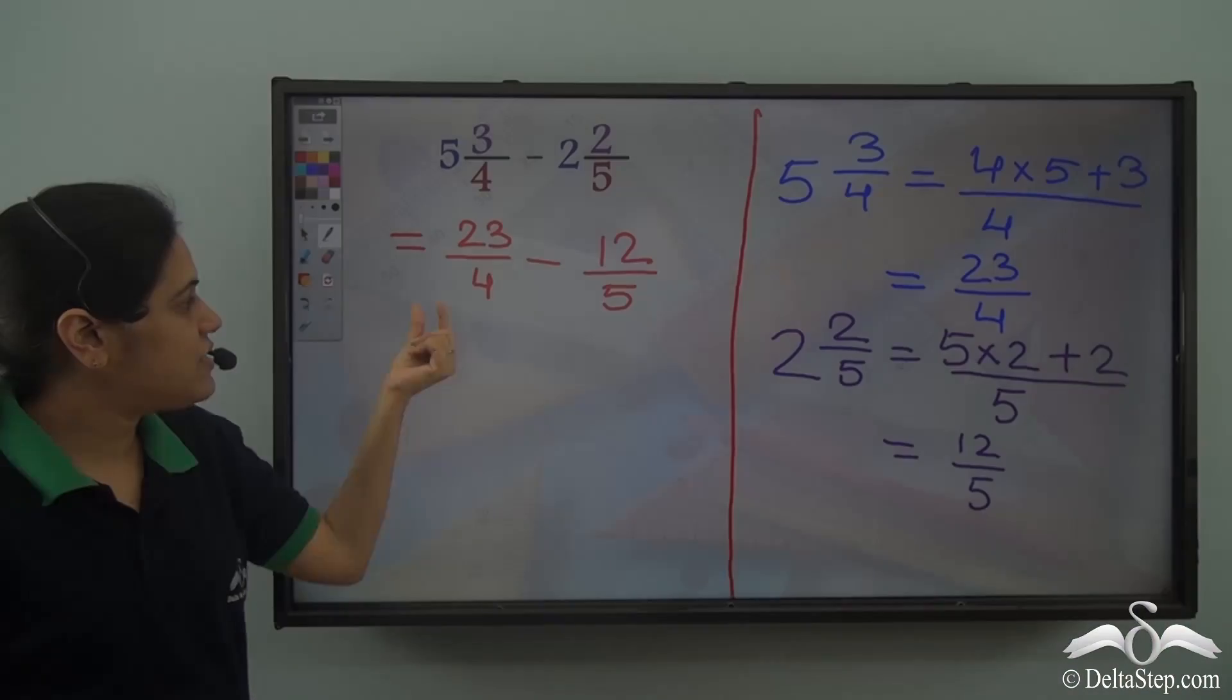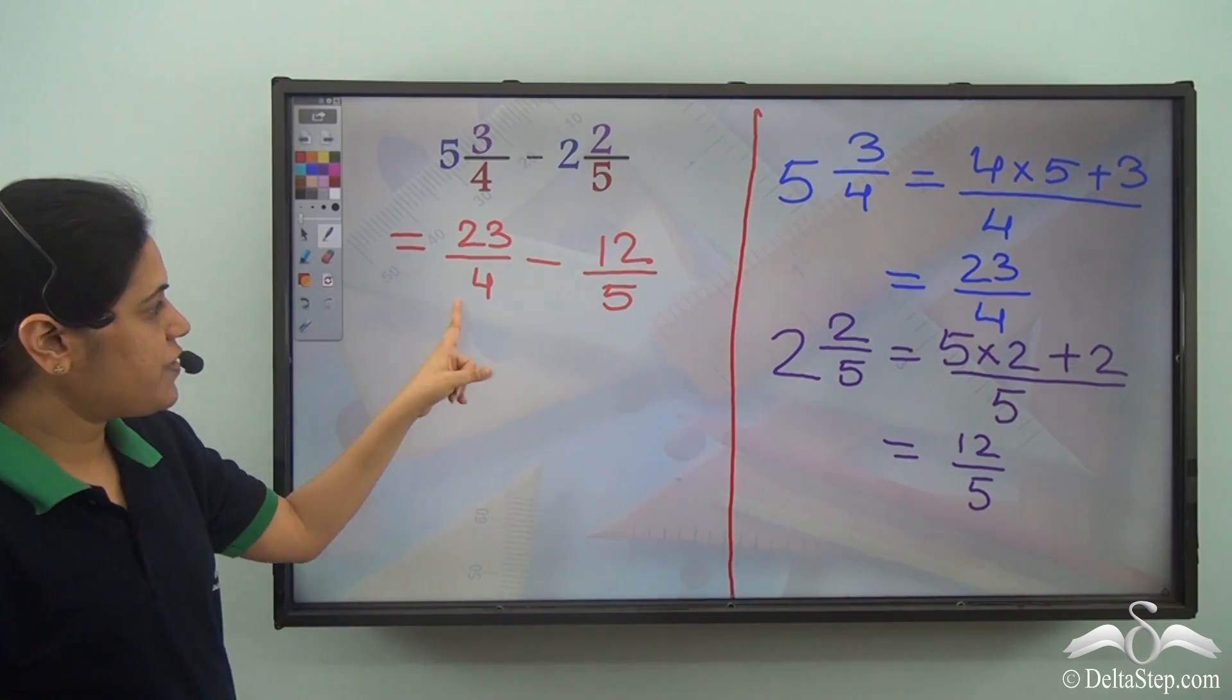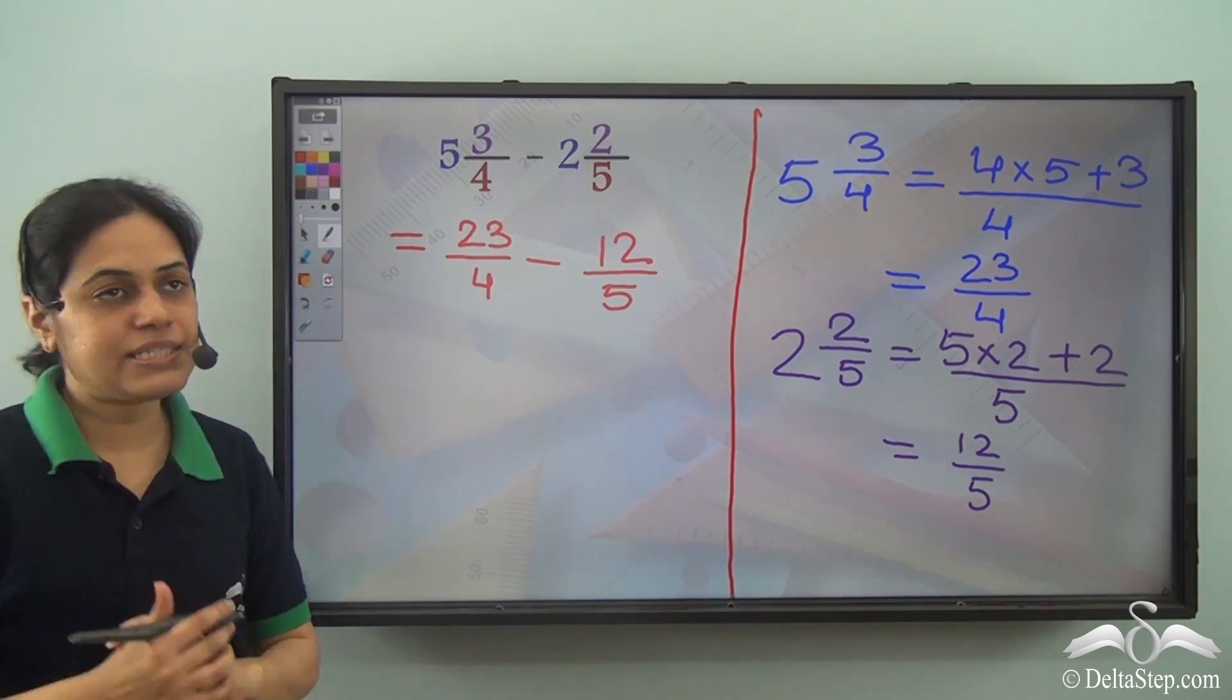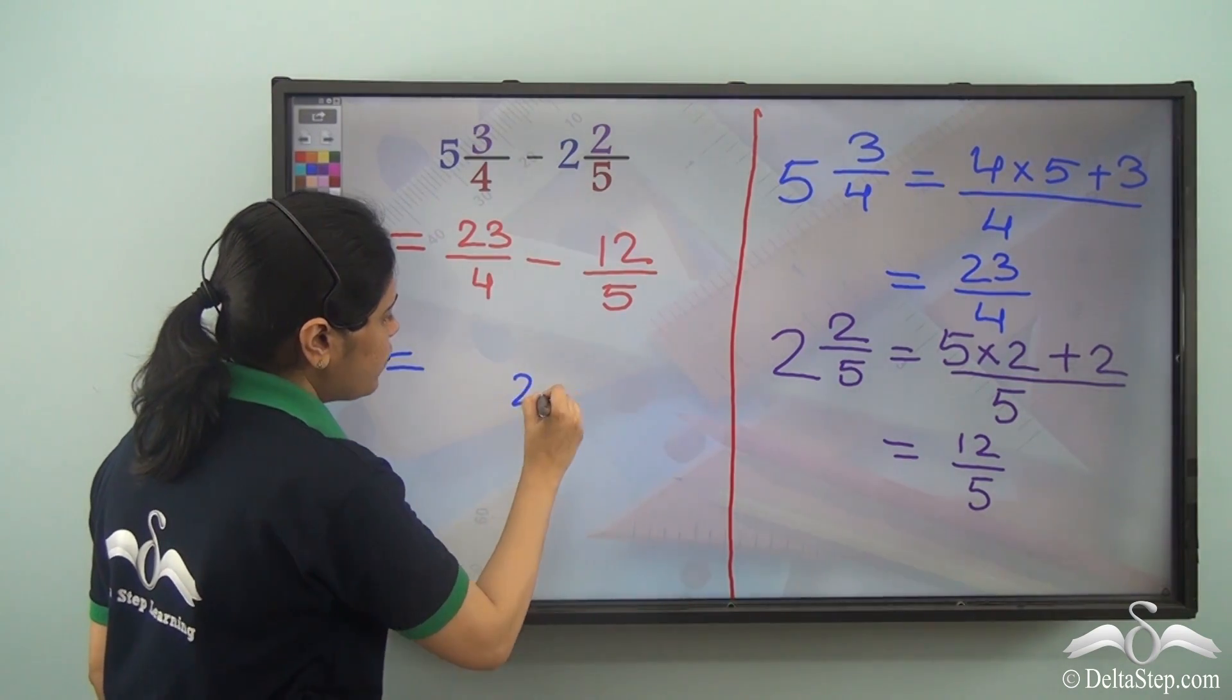Now, how can I subtract them? As we can see, these are unlike fractions. So first I need to find the LCM of the denominators. The LCM of 4 and 5 is equal to 20.